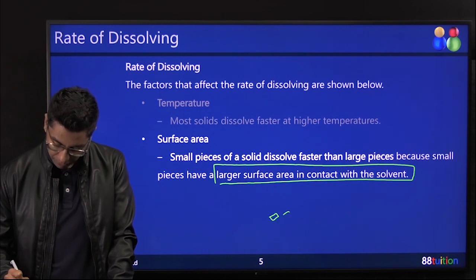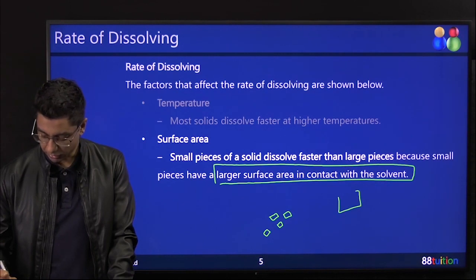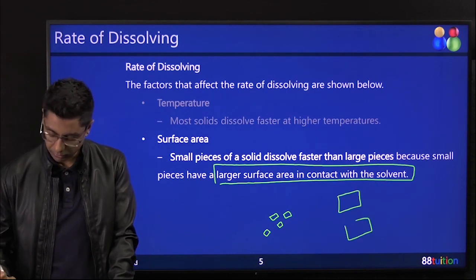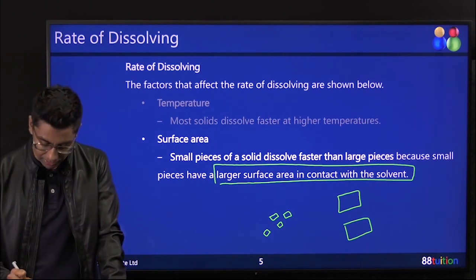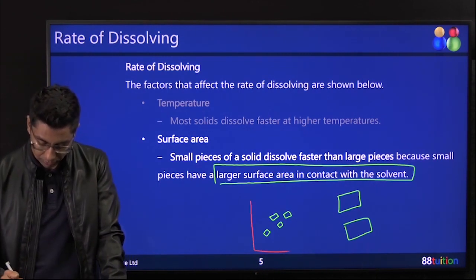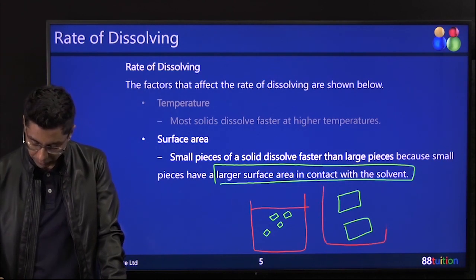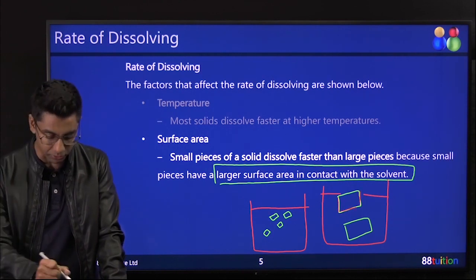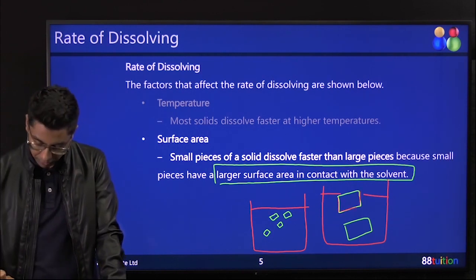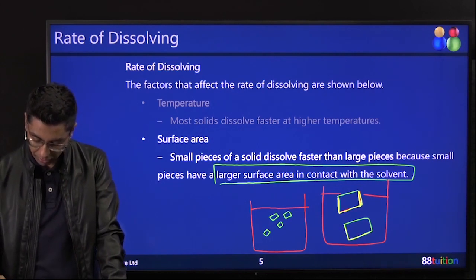Let's see. So this is small and this is big. So surface area is how much they touch the solvent. This part touches the solvent, this part touches the solvent, this part touches the solvent. So I'm going to do it in yellow. So this is the surface area.